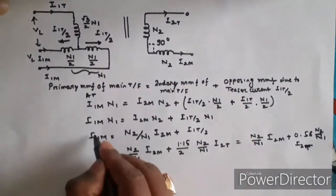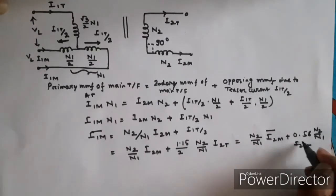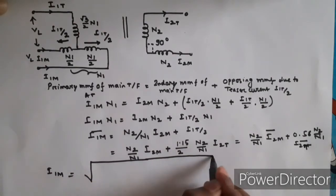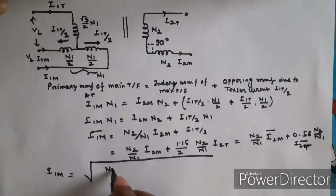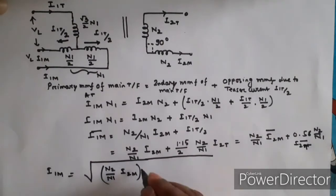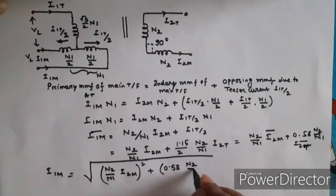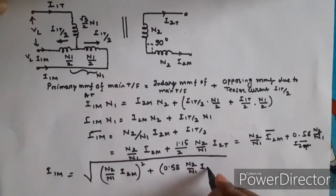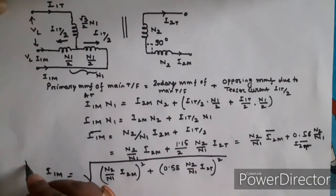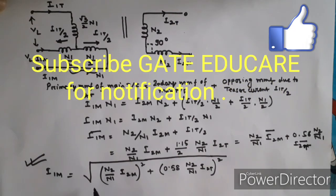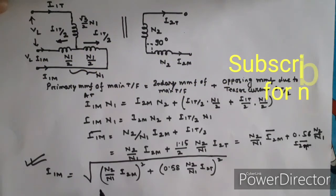Since the phase displacement is 90 degrees, all these quantities are vector quantities. Therefore, the main transformer primary current I1M is the vector sum: I1M = sqrt[ (N2/N1 × I2M)² + (0.58 × N2/N1 × I2T)² ]. You have to remember this equation — numericals based on this equation can come in your exam. This is the end of Scott Connection.